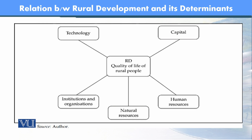Institution and organization کی development اور reform directly rural development اور quality of life of rural people سے link کرتی ہے۔ Technology — چاہے agriculture technology ہو یا information technology — کا بھی direct link ہے rural people کی quality of life سے۔ یہ flow chart سے ہم سمجھ سکتے ہیں کہ rural development کے تمام determinants آپس میں interlinked ہوتے ہیں۔